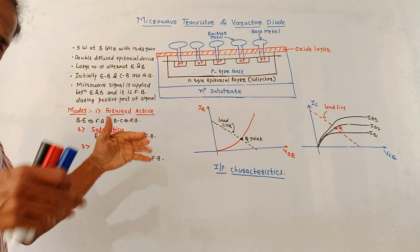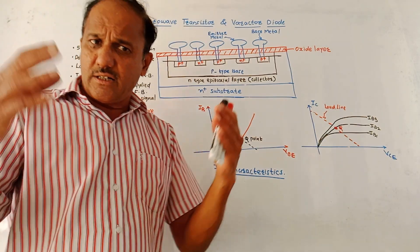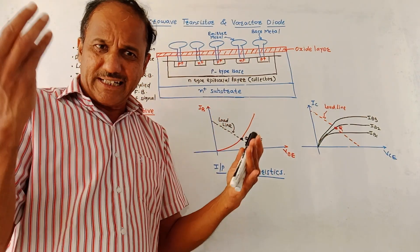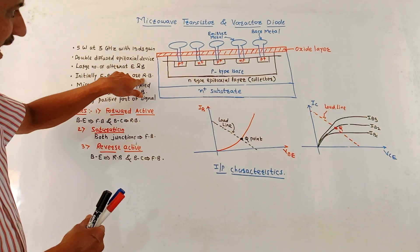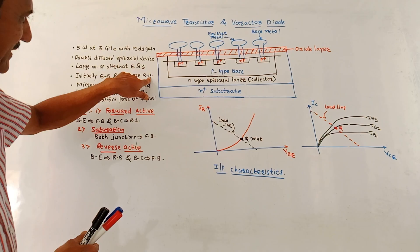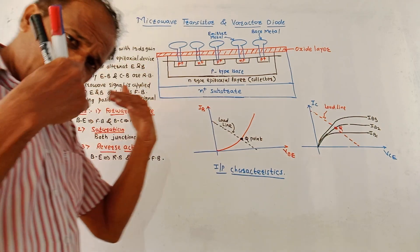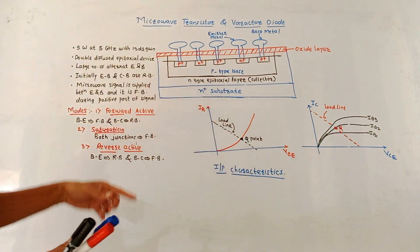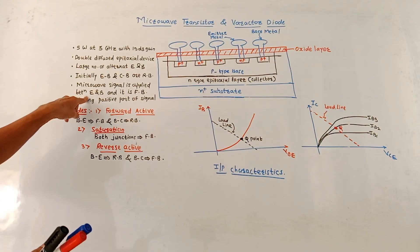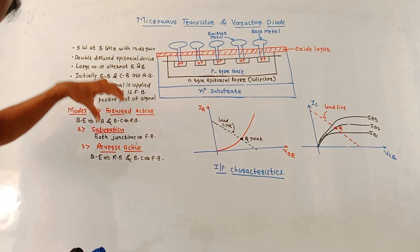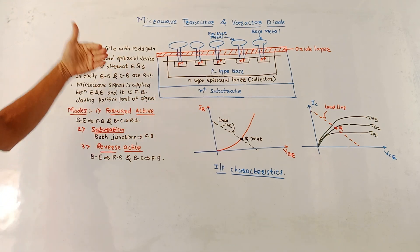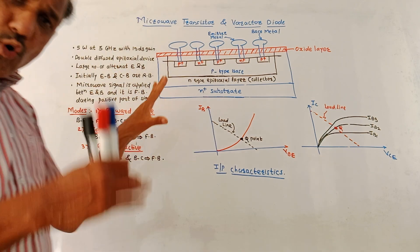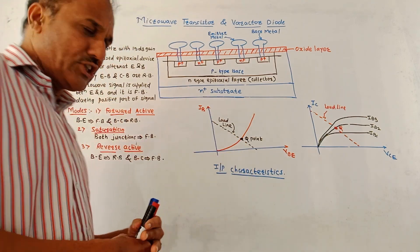In case of transistor there are 3 terminals: collector, base and emitter. Initially, emitter base junction as well as collector base junction are reverse biased. Whenever the Microwave signal is applied between emitter and base, then this junction becomes forward biased during the positive half cycle of the signal.